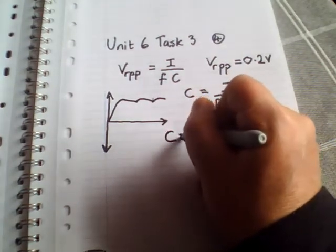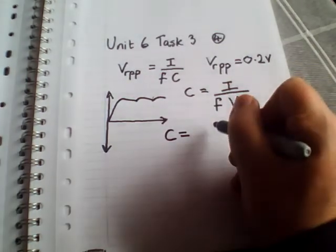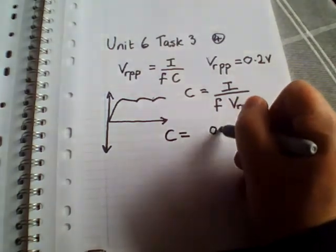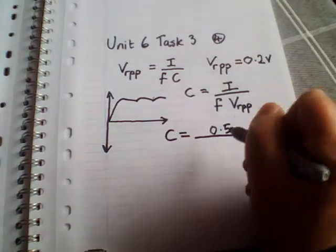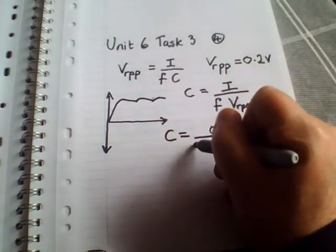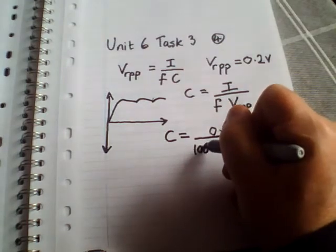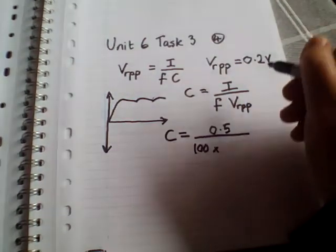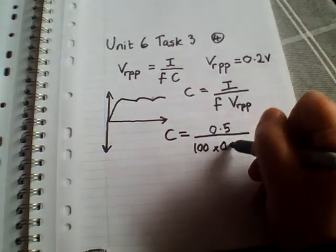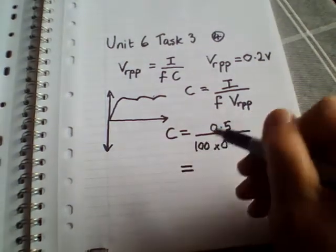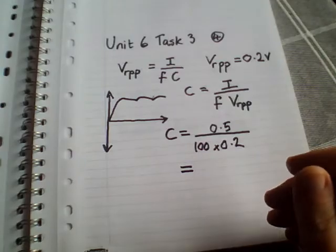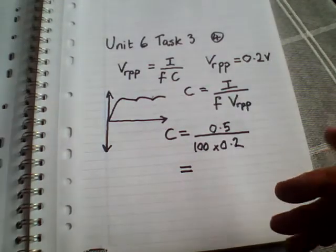So 0.5 divided by a frequency of 100 hertz multiplied by 0.2 ripple voltage. Let's calculate that.